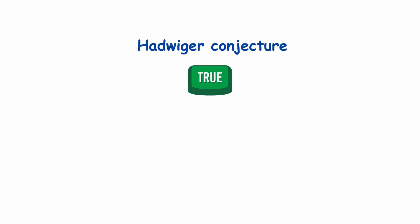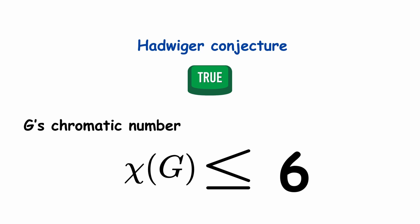If the conjecture is true, then g's chromatic number, chi of g, must be 6 or less, meaning we'll need 6 or fewer colors for a proper vertex coloring on g.